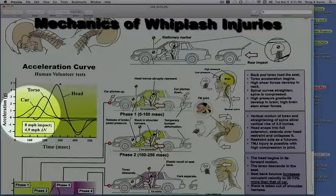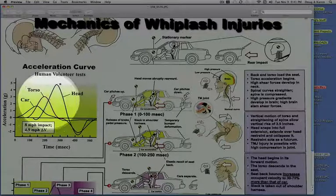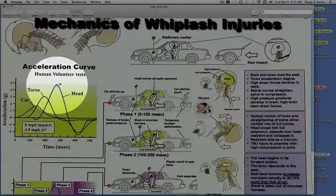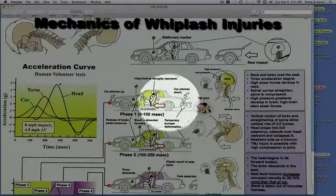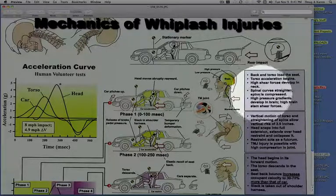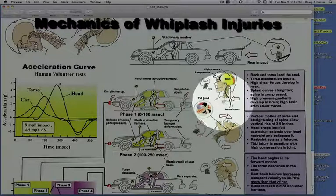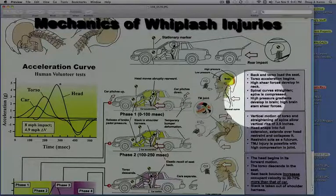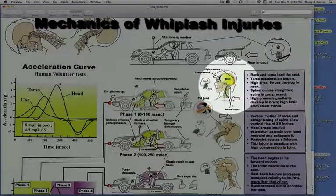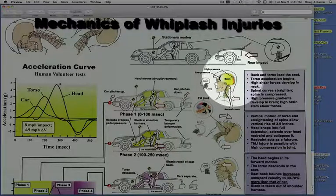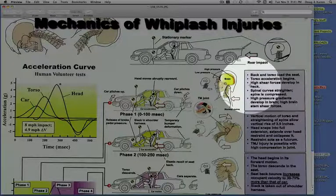Less than a tenth of a second later, the torso accelerates and right behind it, less than a third of a second, the head accelerates and reaches its peak acceleration. The spinal curves begin to straighten because the seat is going forward, the torso is accelerating, and the head is being left behind. You get pressure gradients in the brain and shear forces on the brainstem. There's a area of high pressure in the back of the brain and low pressure in the front because the brain is sloshing backwards.